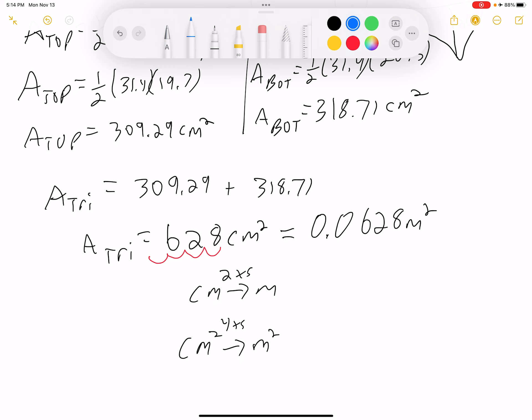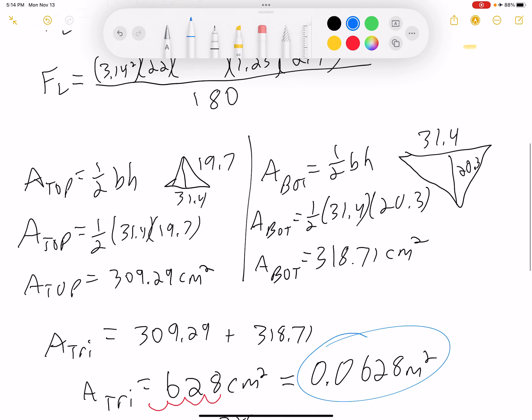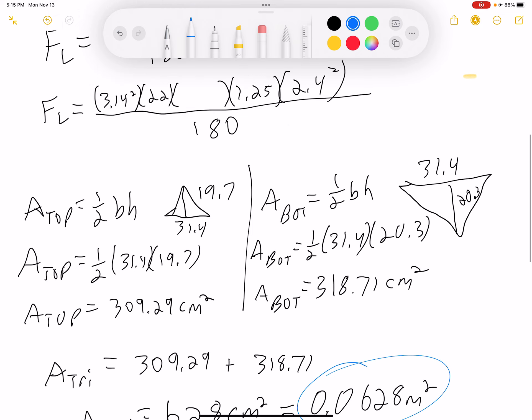This is the value that we are going to plug in all the way up here. That is our area. 0.0628. And now for the final solution, I'm going to plug this in the calculator. So in my calculator, in one line,